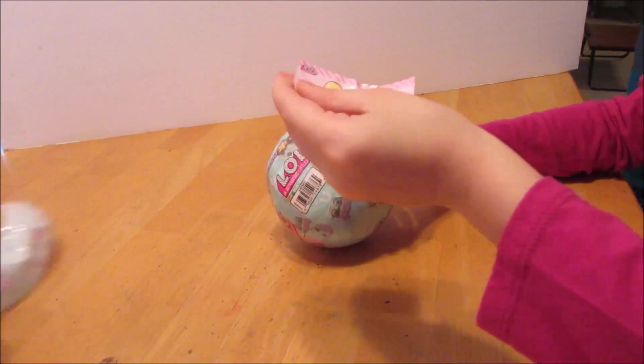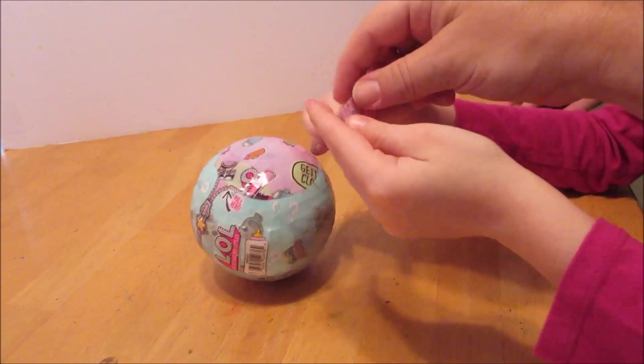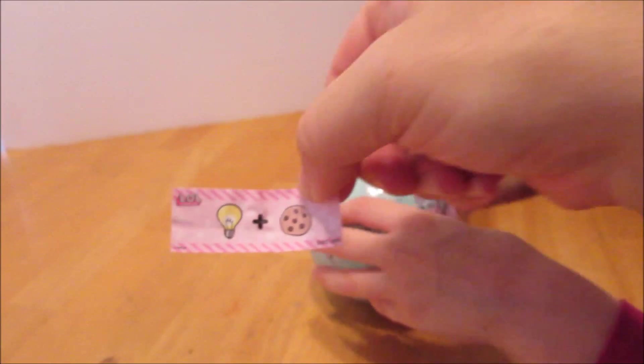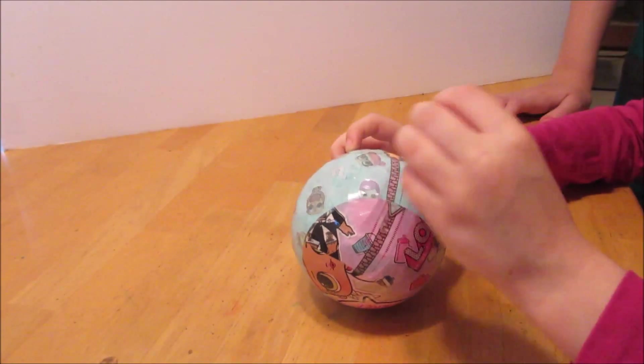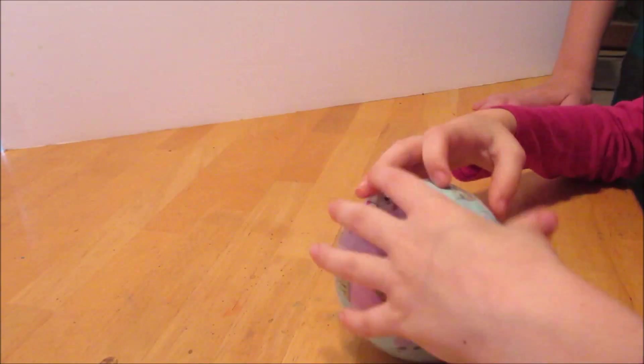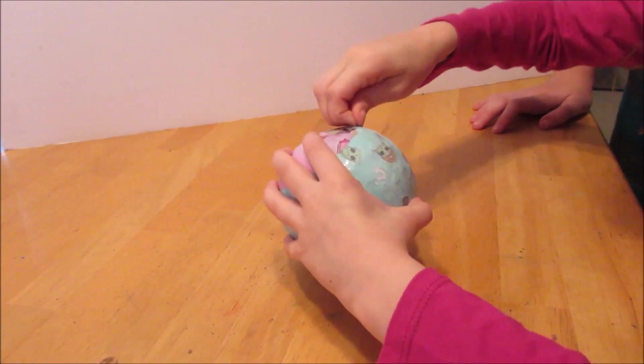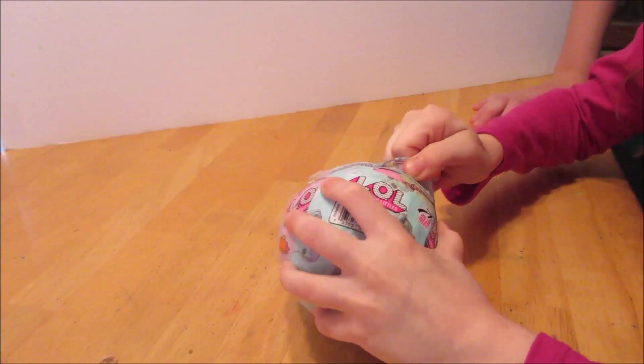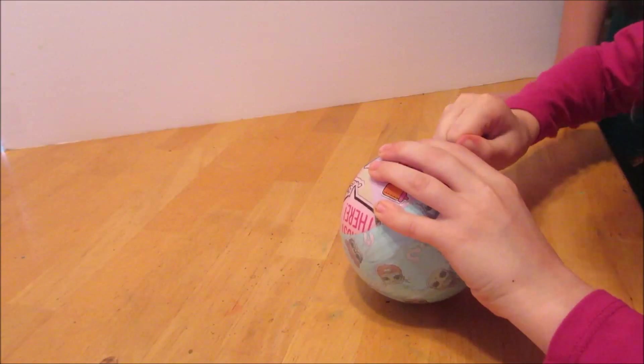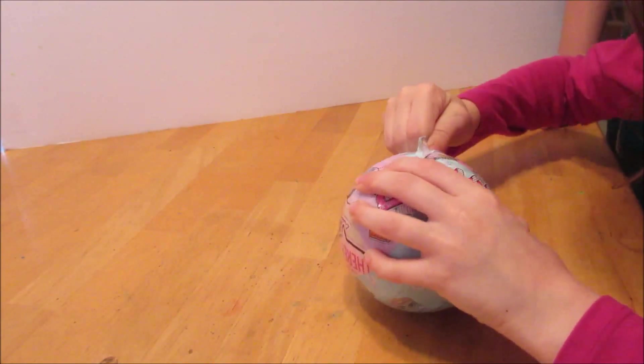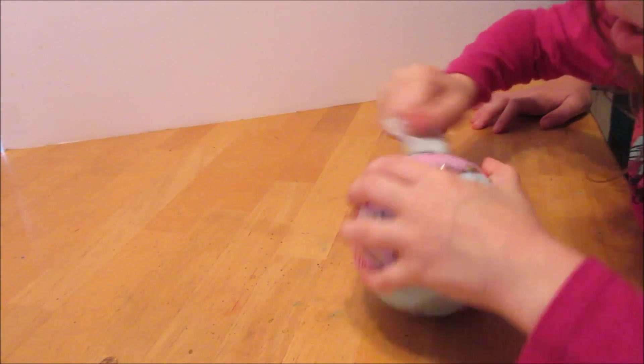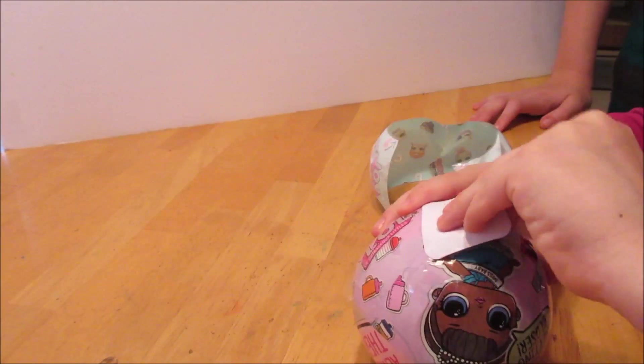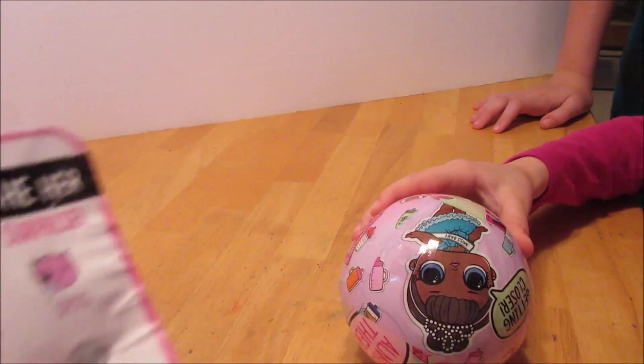All right, my secret code is light bulb, a light bulb and a cookie. Now let's continue. It's plastic. Next should be the collectible stickers. Here are the collectible stickers. Changes color, spits and tingles, and color changes.